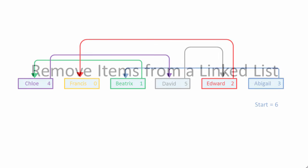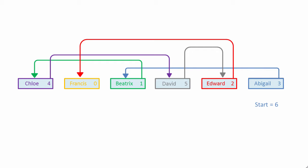Removing an item from a linked list is a matter of adjusting a pointer to effectively eliminate the item from the list.